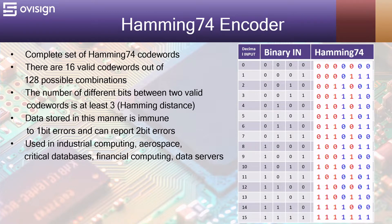Here is the complete set of Hamming 7 for codewords. There are 16 valid codewords out of 128 possible combinations. The number of different bits between two valid codewords is at least three. This is also called a Hamming distance. Data stored in this manner is immune to one-bit errors and can report two-bit errors.